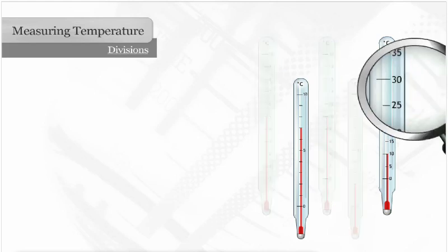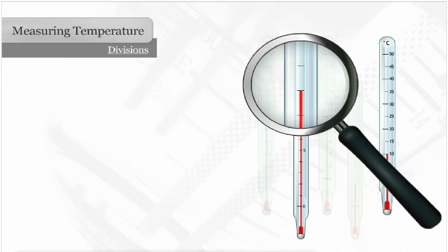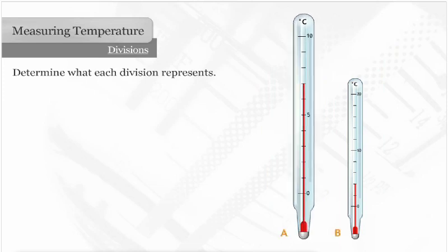Thermometers have some divisions that are marked and some that are unmarked. To read the temperature, first determine what each division represents. This thermometer has a marked division every 5 degrees.